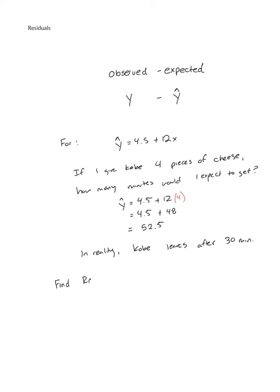To find the residual, I'm going to take y minus y hat, that is my observed minus my expected. Well, my observed is how many minutes he actually stayed, which is 30. My expected is the estimate I made, which is 52.5. So I'm just going to go ahead and take my actual minus my expected. And when I do that, I get negative 22.5.